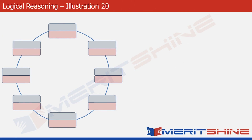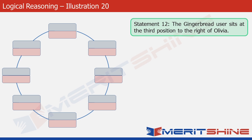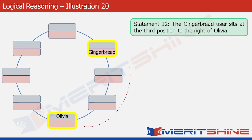This is the structure we are going to make — a circular structure with eight boxes, each divided into two parts. We'll put the names of the girls in the upper part and the Android versions in the lower parts. Let's start with statement 12, which says that the Gingerbread user sits at the third position to the right of Olivia. We can pick any two boxes with a gap of two boxes between them. So let's put Gingerbread and Olivia here. Gingerbread in the lower part and Olivia in the upper part. You can clearly see that the Gingerbread user is at the third position to the right of Olivia. Remember that all these people are facing the center of the table.